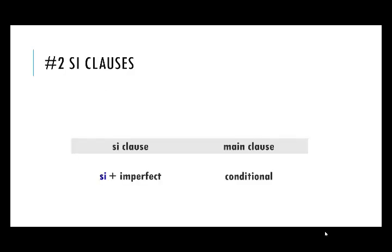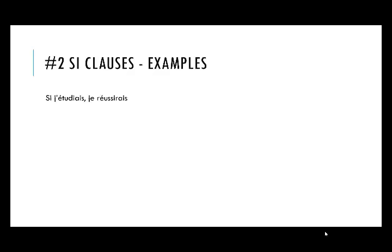Number two si clauses: if the si clause is in the imperfect, the main clause will be in the conditional. For example: 'Si j'étudiais, je réussirais' — if I studied, I would succeed. 'Si elle venait, nous jouerions au tennis' — if she came, we would play tennis. 'S'ils allaient en taxi, ils iraient plus vite' — if they went by taxi, they'd go faster. You'll notice that because we have the imperfect and the conditional, they share the same endings — both use the imperfect endings.